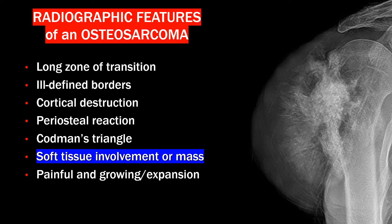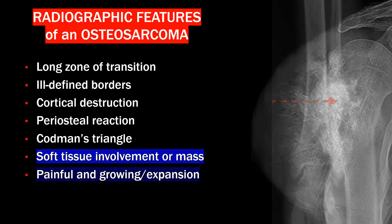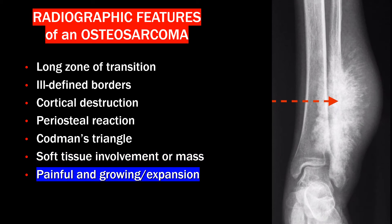Another aggressive finding is involvement of the soft tissues or a large soft tissue mass. Any type of painful, growing, or expansile lesion is also considered a more aggressive finding.